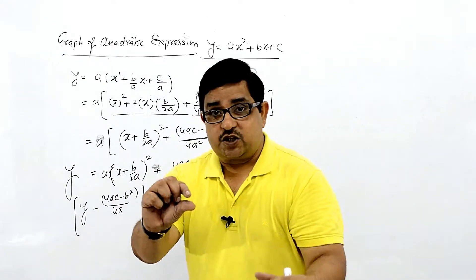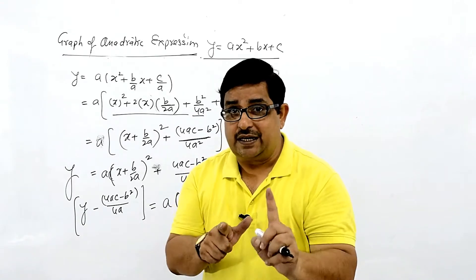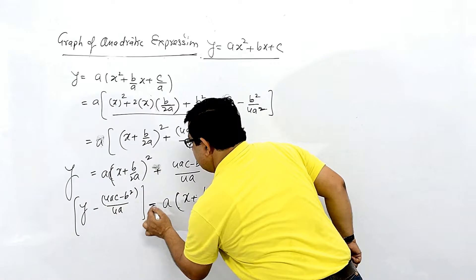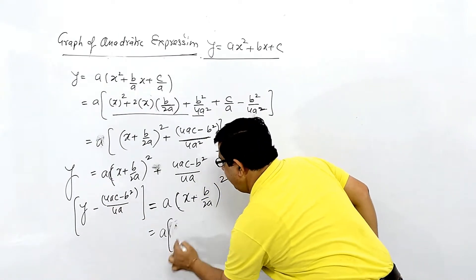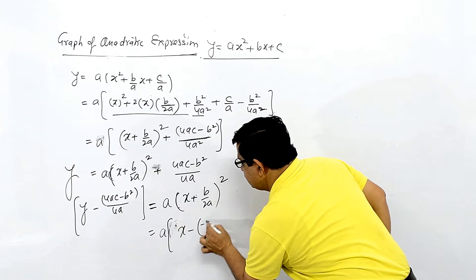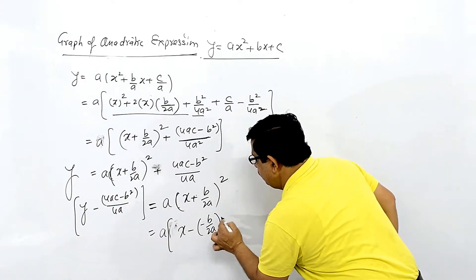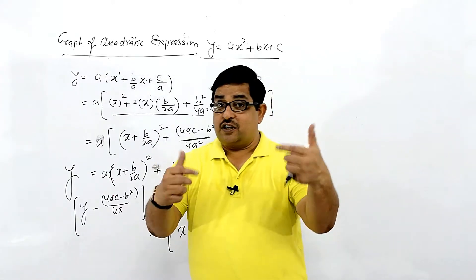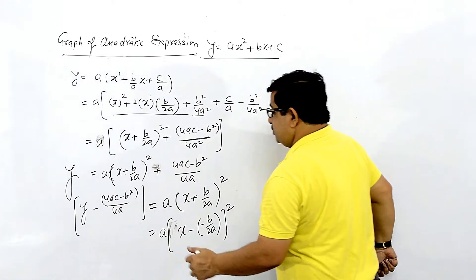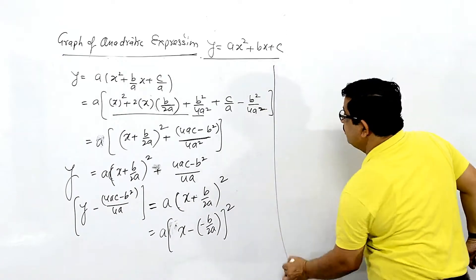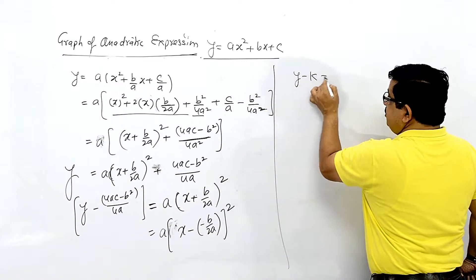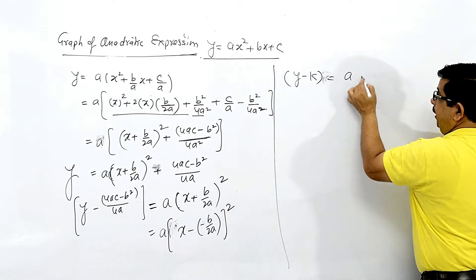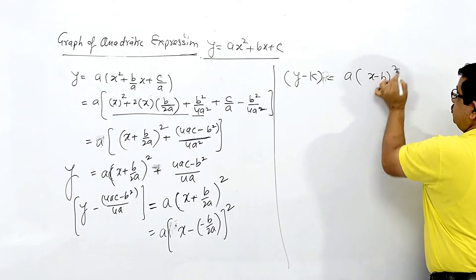You can write x minus h, so here is minus of minus. You can write a into x minus (−b/2a), this whole squared. You can compare it with the general format: y minus k equals a into (x minus h) squared.